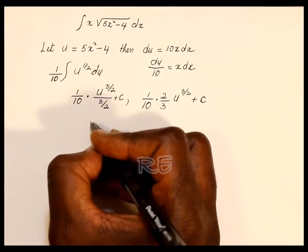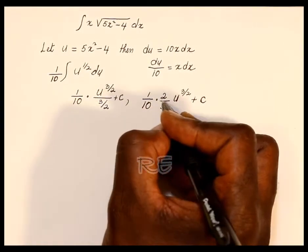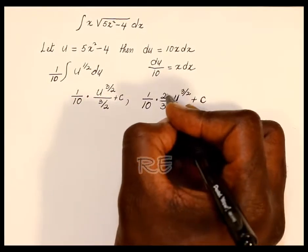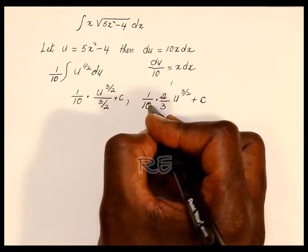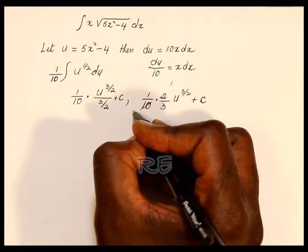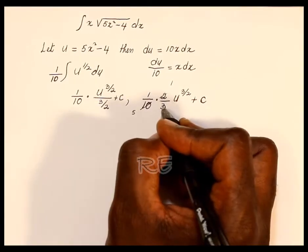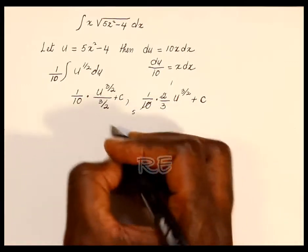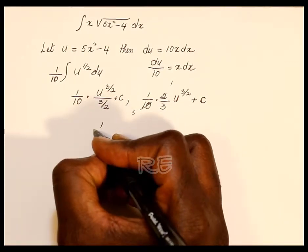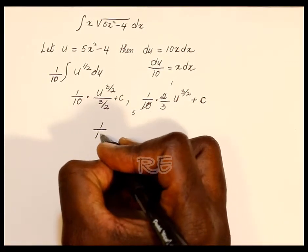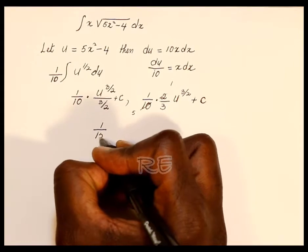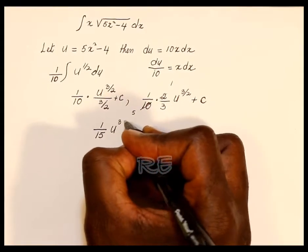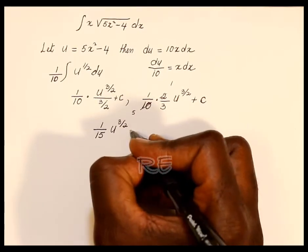Now, cross cancellation: 2 goes into itself once and 2 goes into 10 five times. It's really 1 times 1 which is 1, and 5 times 3 which is 15. So it's 1 over 15, times u to the 3 halves.